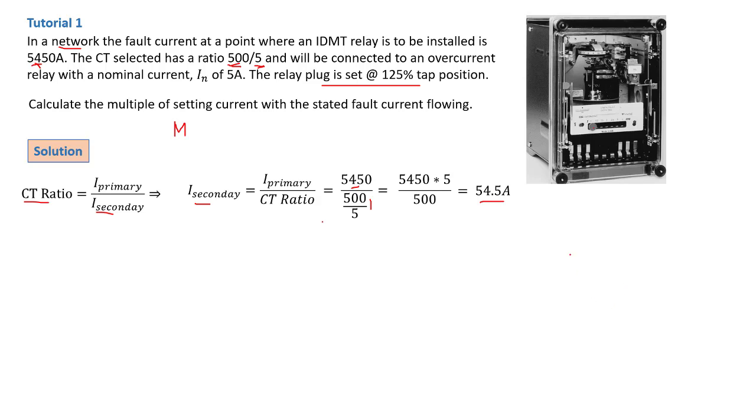What do you do next? You need to find the multiple of setting current. We already said that M is equal to I secondary divided by the setting current. What is the setting current? This is a very good question. The setting current is equal to your nominal current, IN, which was given to be 5 amps times your plug settings. You see the importance of your plug settings.